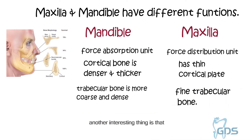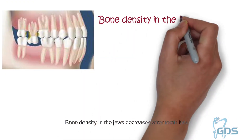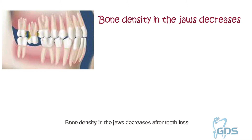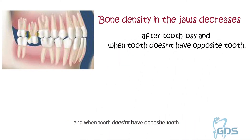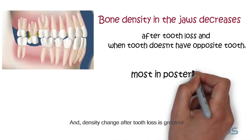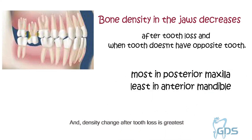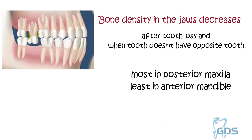Another interesting thing is that bone density in the jaws decreases after tooth loss and when a tooth does not have an opposing tooth. The density change after tooth loss is greatest in the posterior maxilla and least in the anterior mandible.